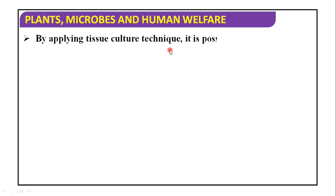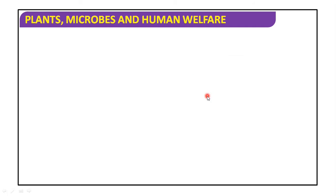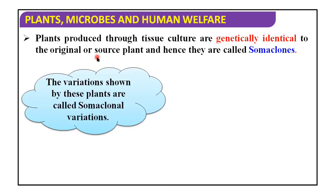By applying tissue culture technique, it is possible to produce a large number of plants in a very short time and a limited space — this is a great advantage. Like conventional agriculture breeding is not sufficient, so tissue culture technique provides a great advantage to produce plants in a short time in a limited space. Hence, this technique is known as micropropagation. Plants produced through tissue culture are genetically identical to the original plant, and hence they are known as somaclonal.